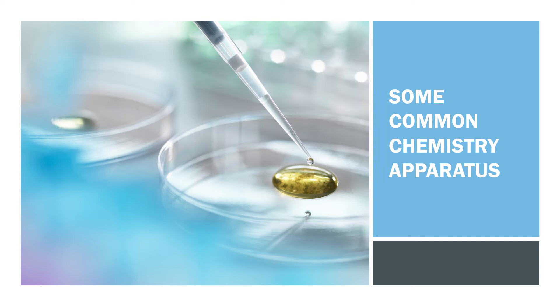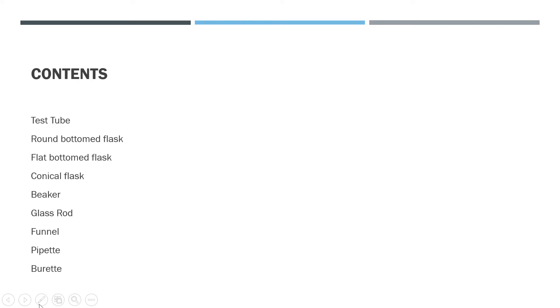Hello everyone, welcome back to Study Run. Today we are learning some common chemistry apparatus. Let's get started. Contents: test tube, round bottom flask, flat bottom flask, conical flask, beaker, glass rod, funnel, pipette, and burette.